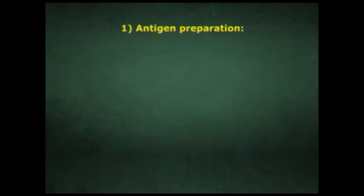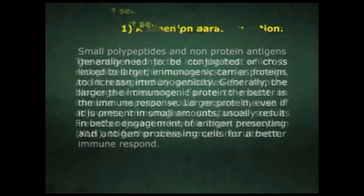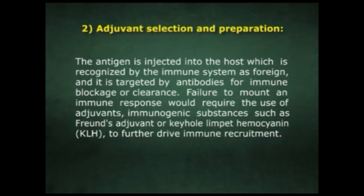For antigen preparation, small polypeptides and non-protein antigens generally need to be conjugated or cross-linked to larger immunogenic carrier proteins to increase immunogenicity. Generally, the larger the immunogenic protein, the better the immune response. Larger proteins, even if present in small amounts, usually result in better engagement of antigen-presenting and antigen-processing cells for a better immune response.